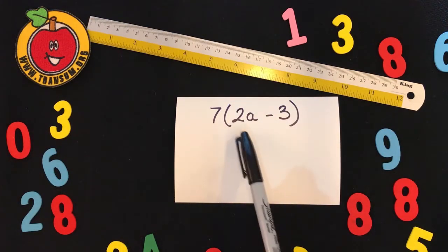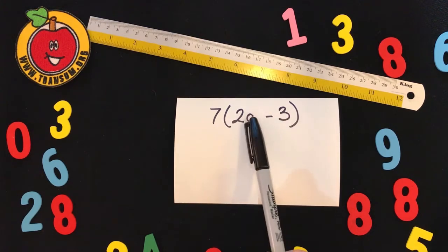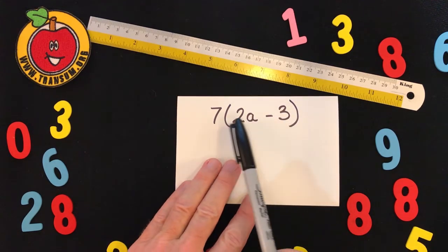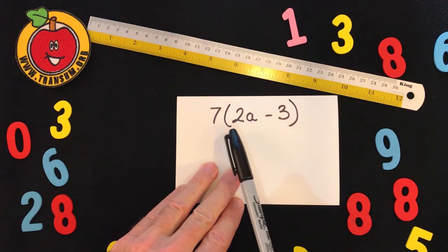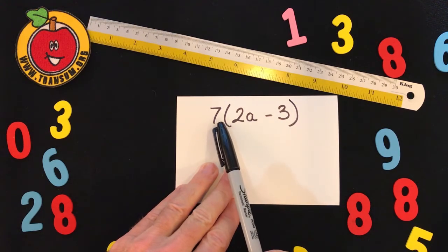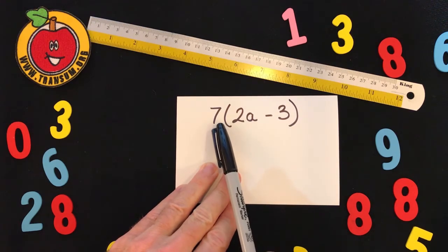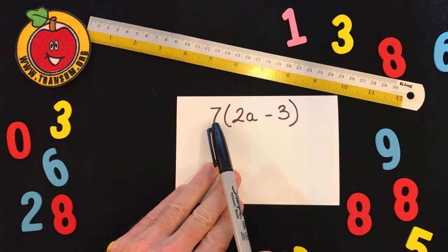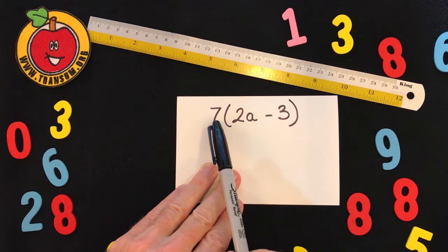Here we have a typical example of two terms inside a bracket multiplied by a seven which is outside the brackets. The lack of a sign between the seven and the brackets in algebra means there's a hidden times sign there, so everything inside the bracket has to be multiplied by the seven which is outside the brackets.